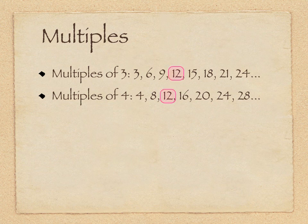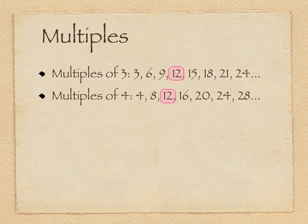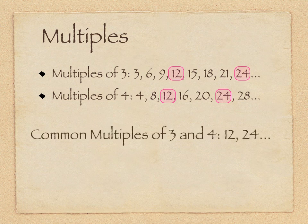We can see that there are some numbers that are common to both lists. So sometimes we talk about common multiples. Twelve is not the only number that's common. Twenty-four is also common in both lists. So what we can say is that the common multiples of three and four are twelve, twenty-four.